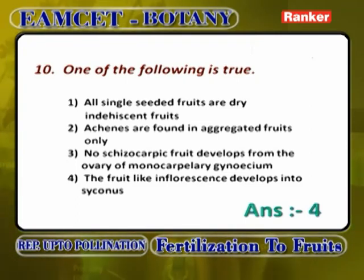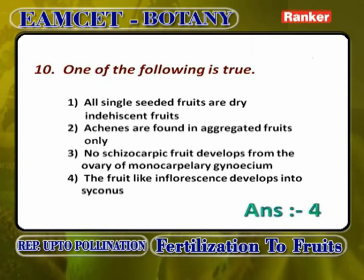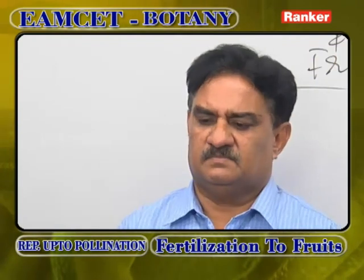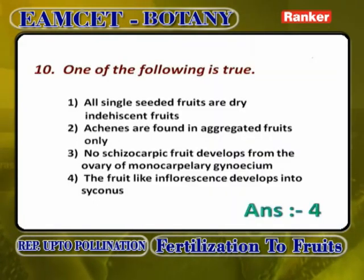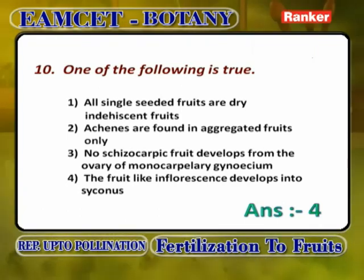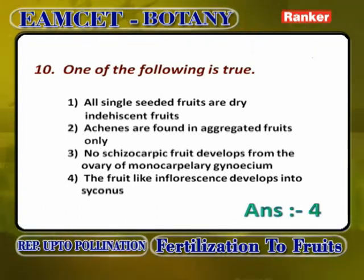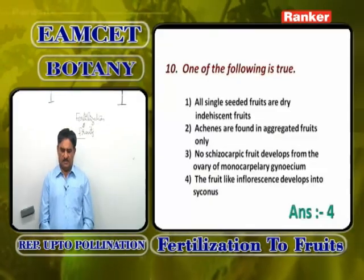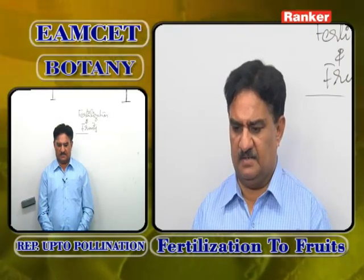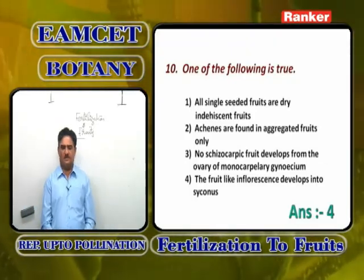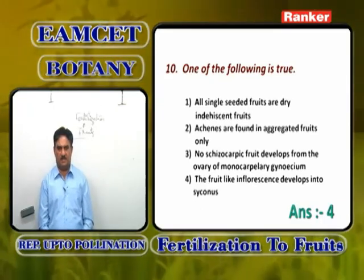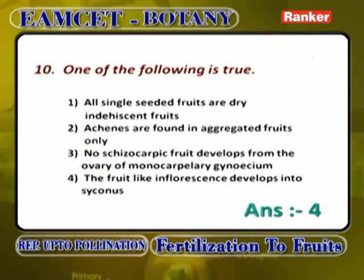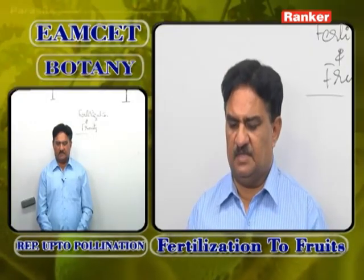All dry indehiscent fruits are single-seeded is correct; all single-seeded fruits are dry indehiscent is wrong. Achenes found in aggregate fruits only is also wrong because achenes are found even in normal fruits. No schizocarpic fruit develops from ovary of monocarpellary gynoecium is also wrong. The fruit-like inflorescence develops into syconus is correct — hypanthodium normally develops into syconus fruits.